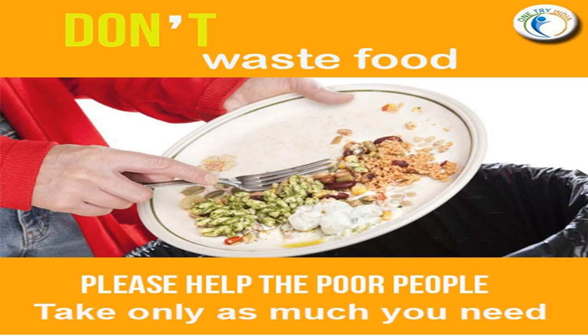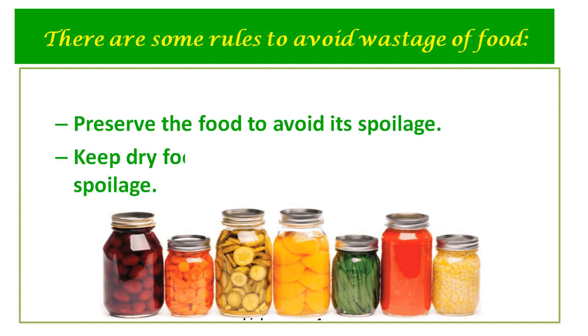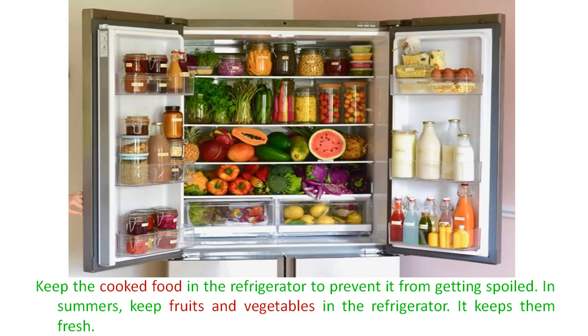Along with this, an important point is we should not waste our food. There are many poor children in our country who are dying of hunger. So follow certain rules to avoid wastage of food: preserve food to avoid spoilage; keep dry food in airtight containers; keep cooked food in the refrigerator to prevent spoilage; and in summers, keep fruits and vegetables in the refrigerator to keep them fresh.